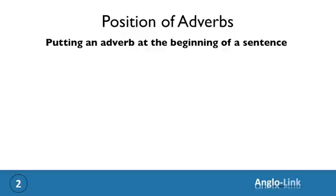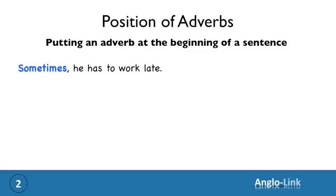For example, we had the sentence: 'He sometimes has to work late.' If you want to stress 'sometimes,' put it at the beginning, and in writing, separate it with a comma, and say: 'Sometimes, he has to work late.'